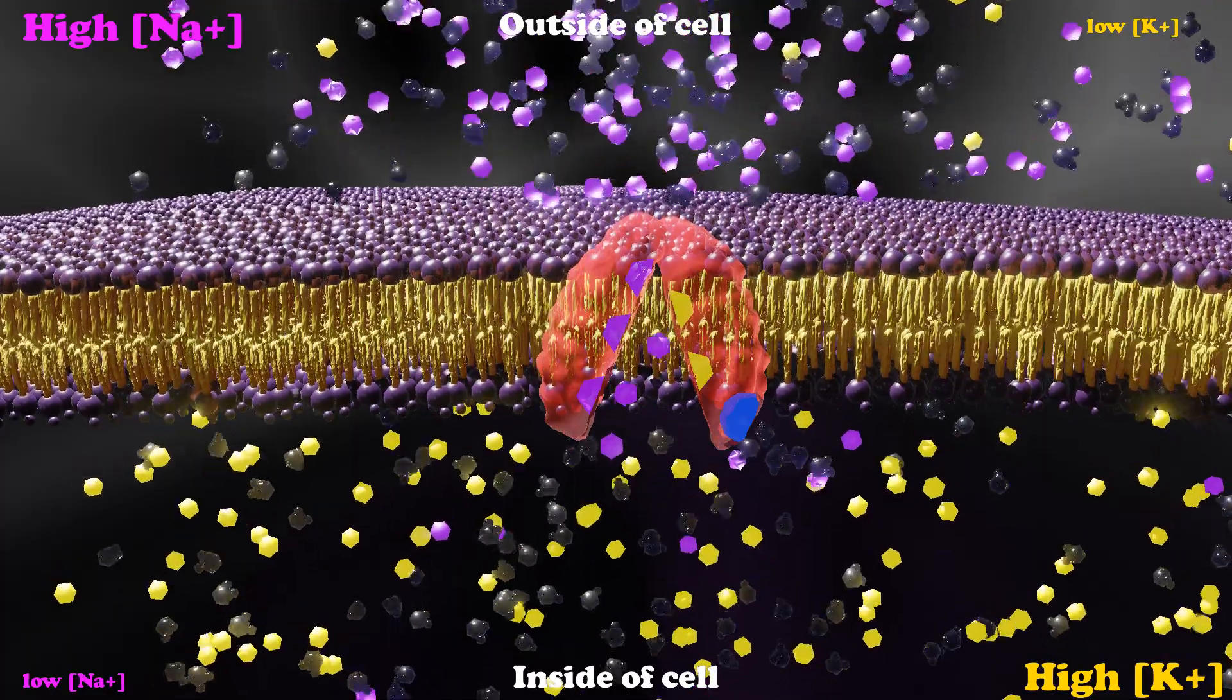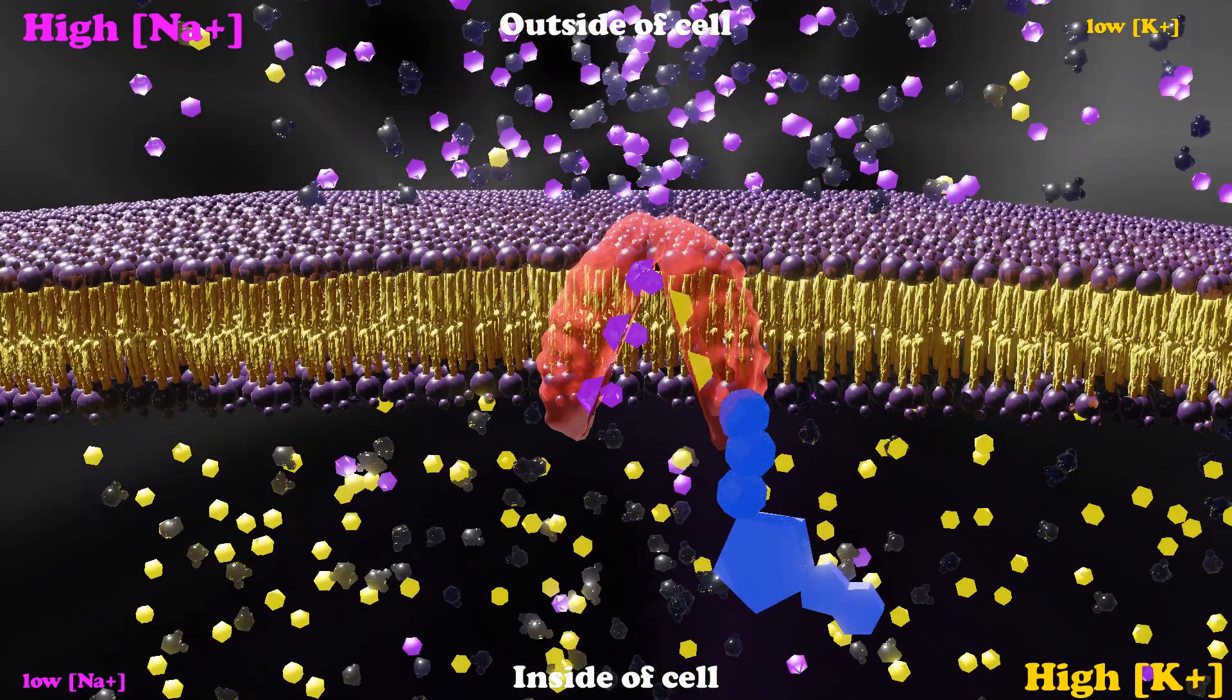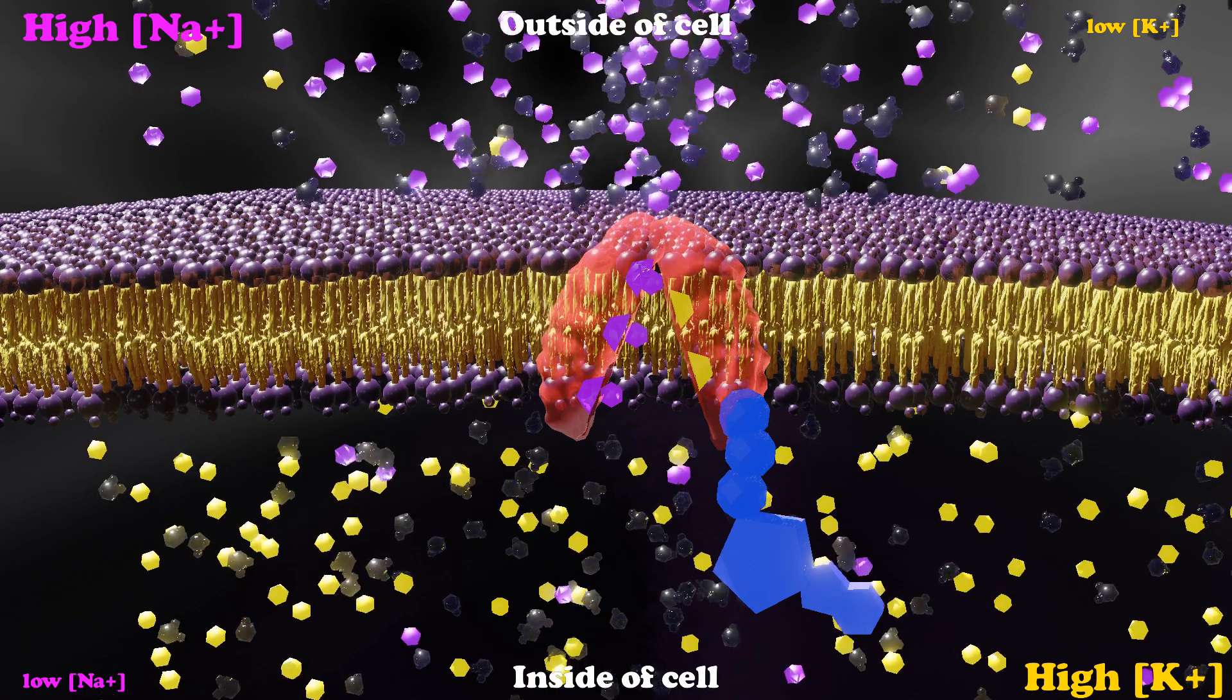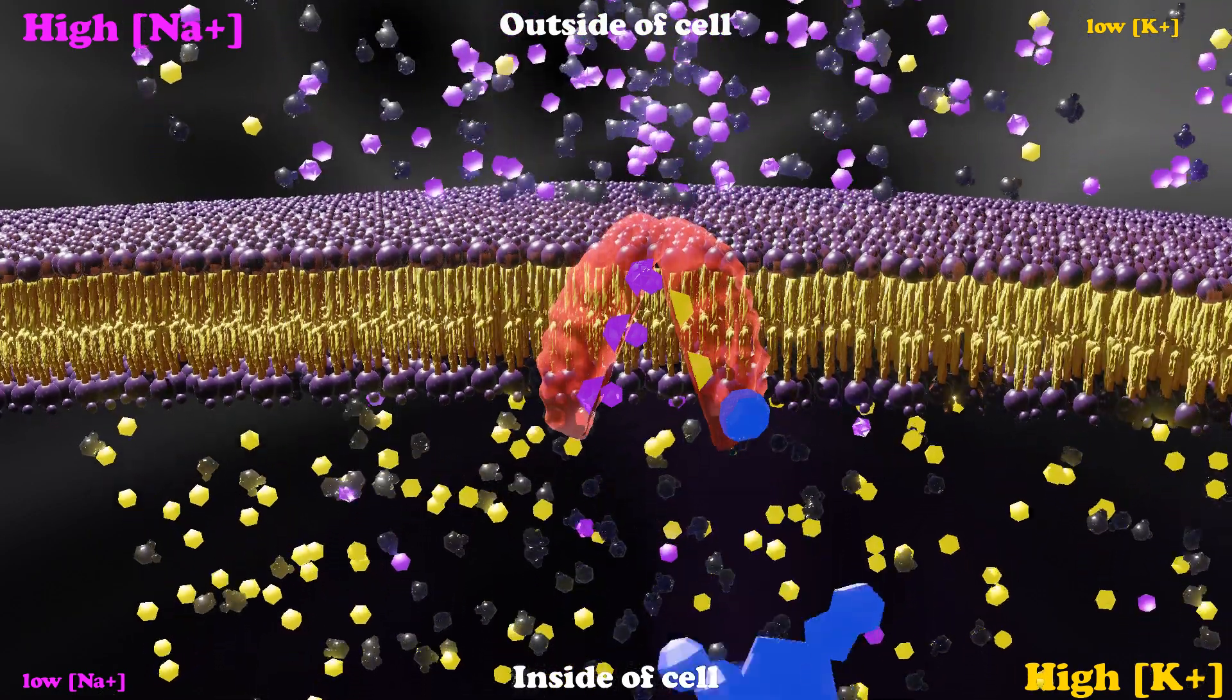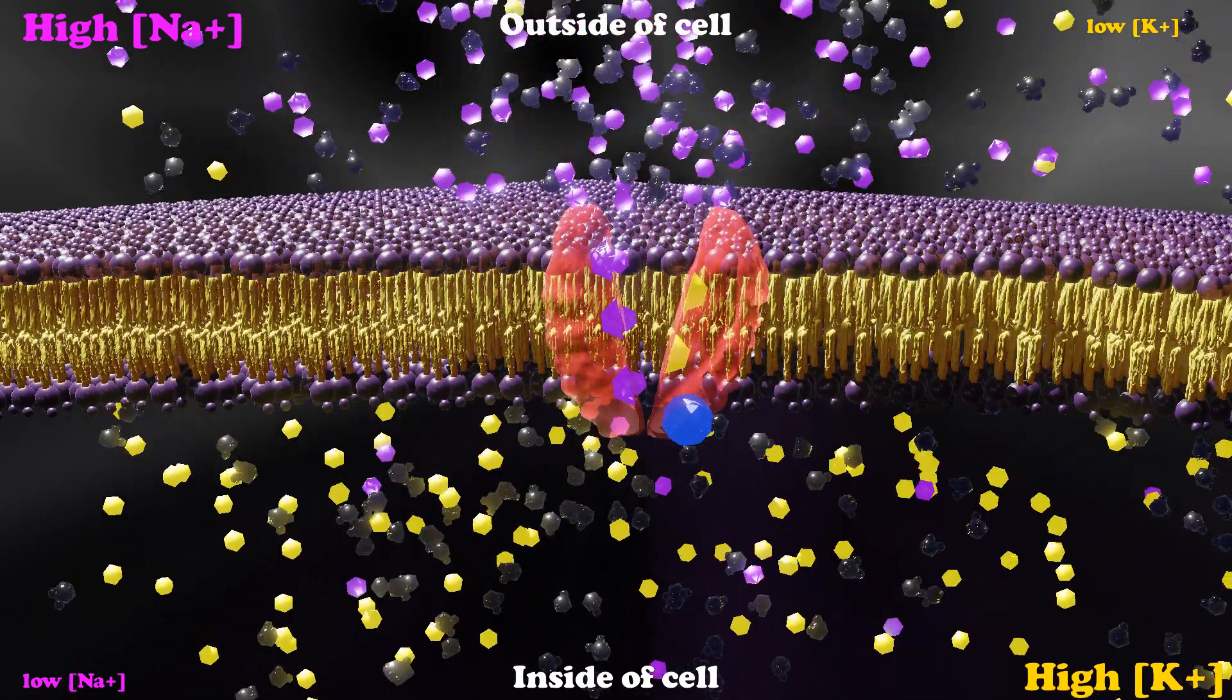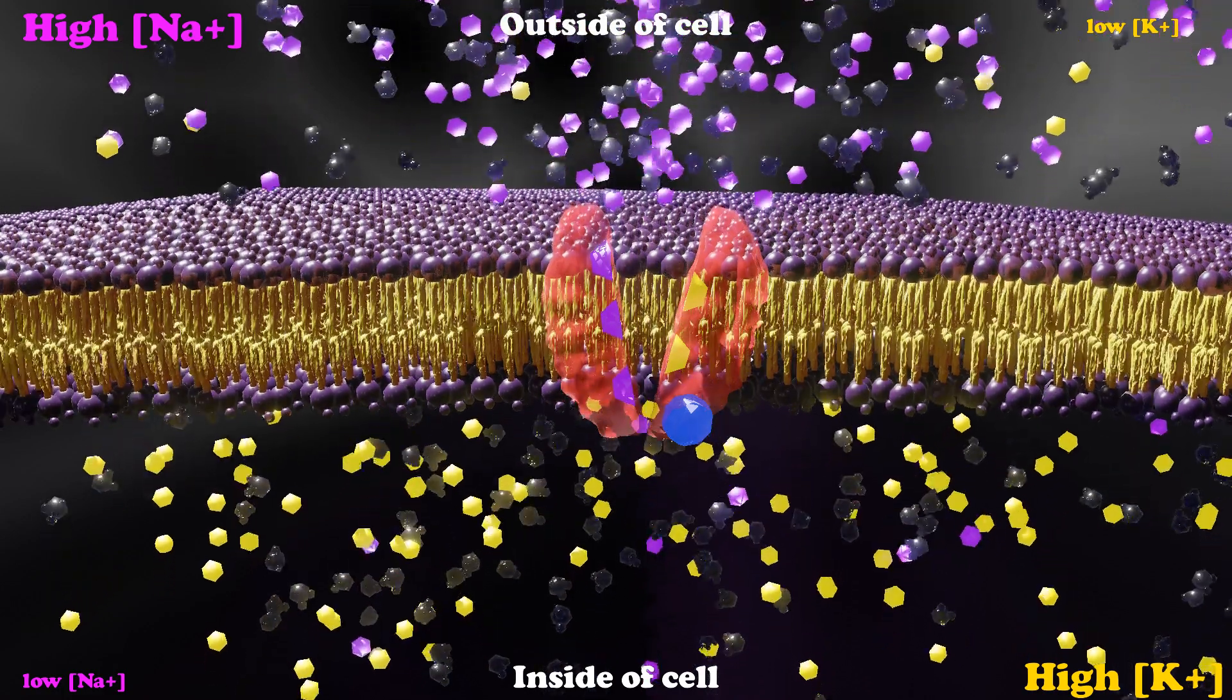It first is going to allow the sodium ions to bind and ATP to bind. Then ATP is going to break off one of its phosphates, which the energy inside of that bond is going to force a conformational change in the protein to release the sodium outside of the membrane.